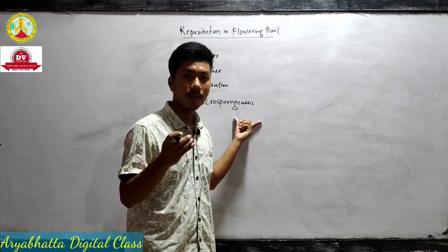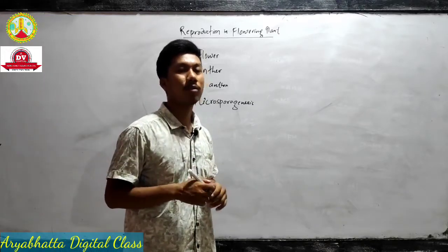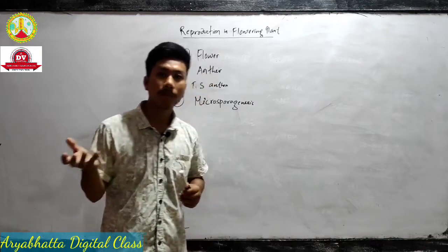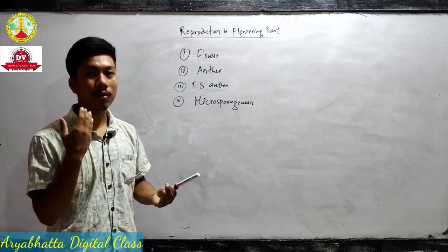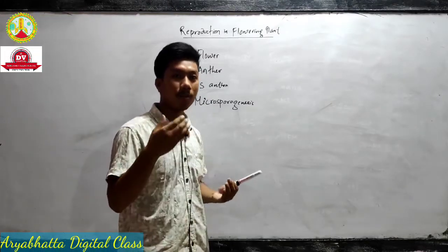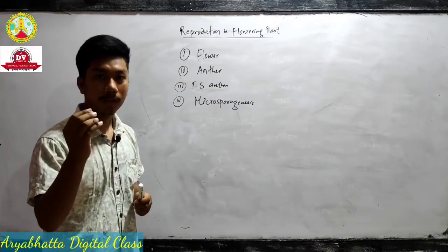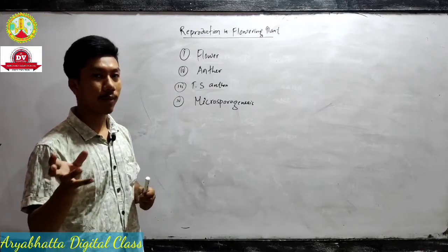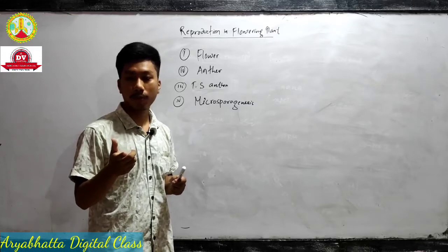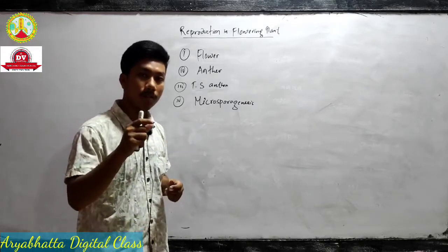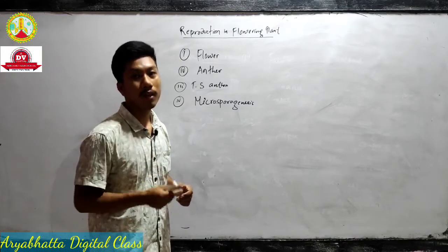In microsporogenesis: when the anther is young, all cells inside the microsporangium — known as archesporial cells — are compactly attached. As the anther matures, the microsporangia grow and cells are called microspore mother cells. A microspore mother cell undergoes meiotic division giving rise to a microspore tetrad; these separate to give microspores, which then undergo mitotic division to finally give pollen grains. Pollen grains have two layers: the inner layer is intine made of cellulose, and the outer layer is exine made of sporopollenin.